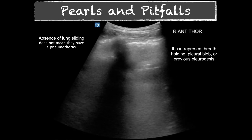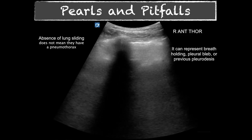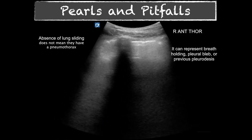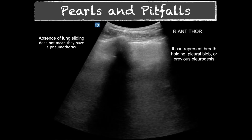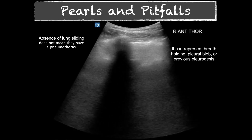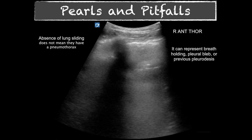Regarding lung sliding: the pleural line is identified here, and if we watch it, we don't see it moving or shimmying — no 'ants on the log' appearance. Absence of lung sliding does not mean pneumothorax. Presence of lung sliding rules out pneumothorax at that spot, but absence does not rule it in. Absence can be due to breath holding, a pleurobleb, or a previous pleurodesis. Finding a lung point is pathognomonic for pneumothorax, but absence of lung sliding alone is not.